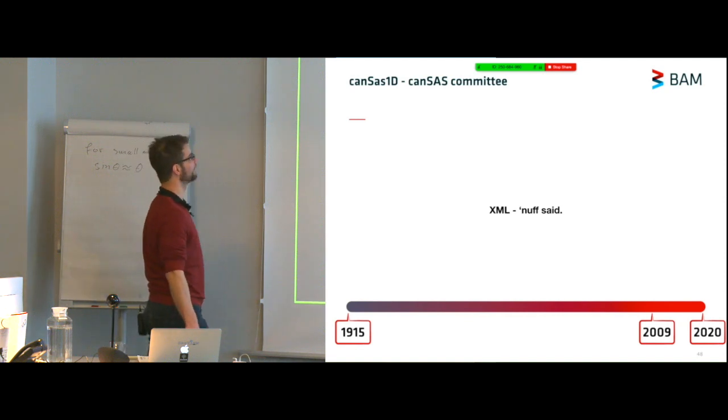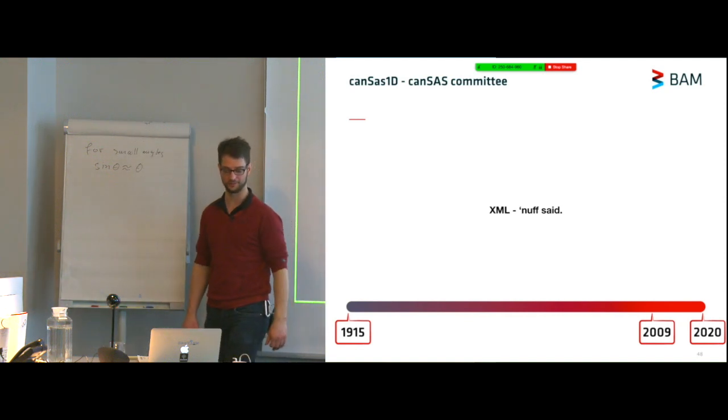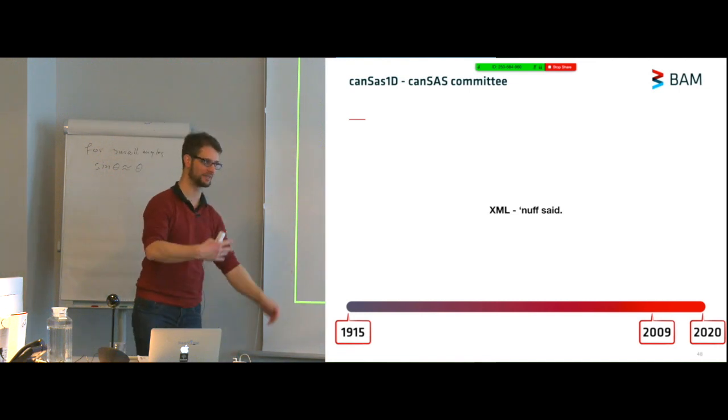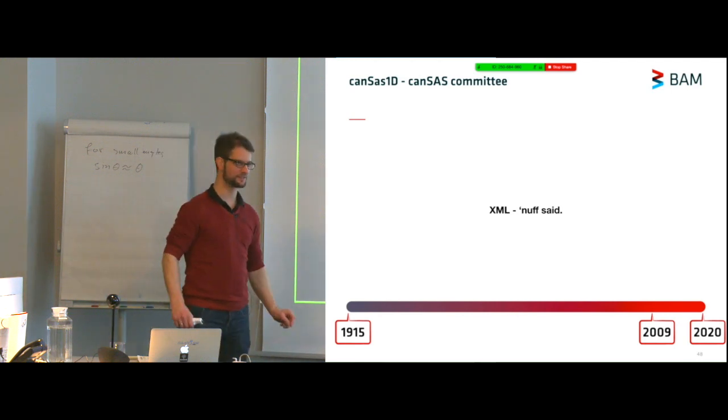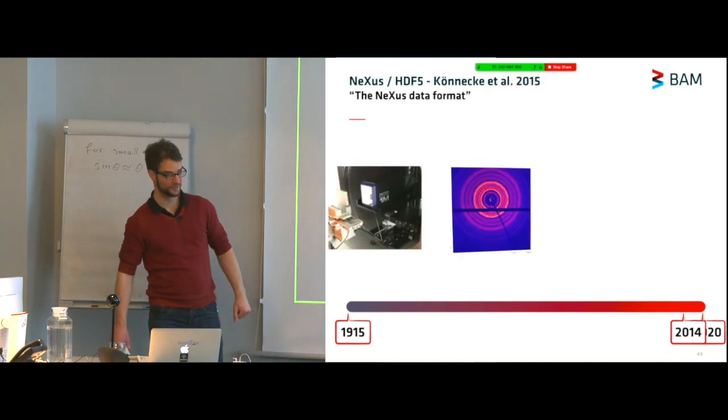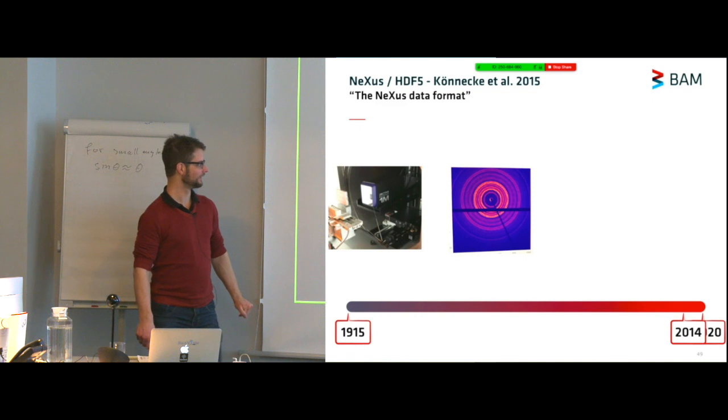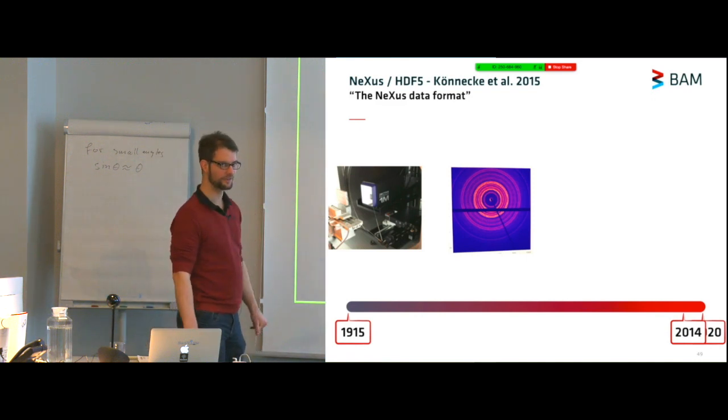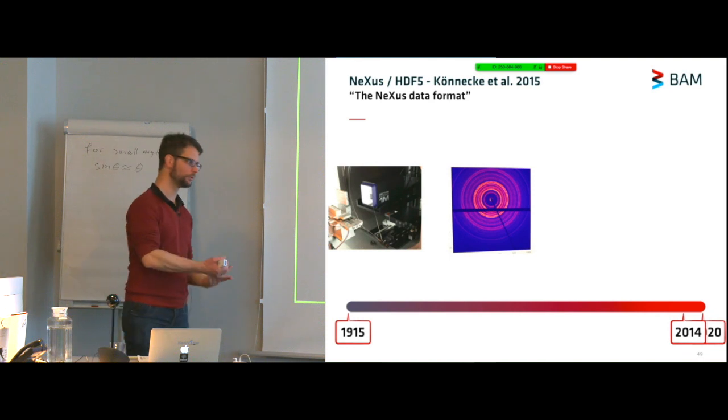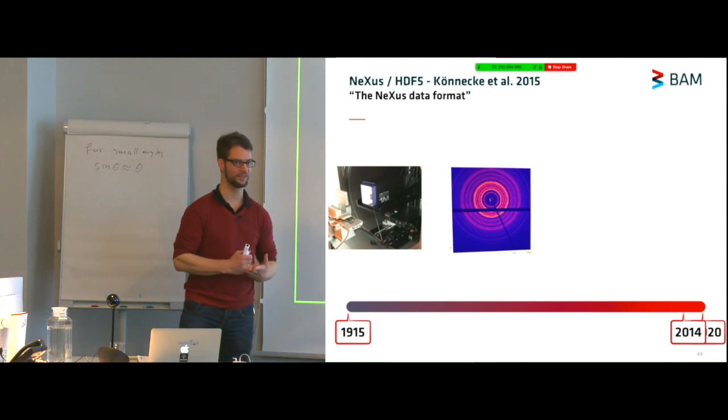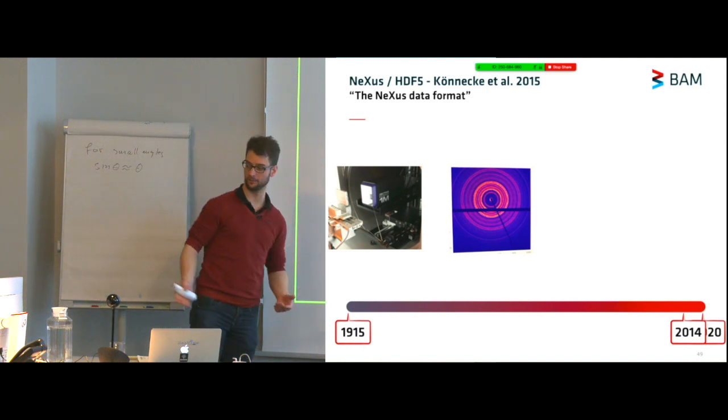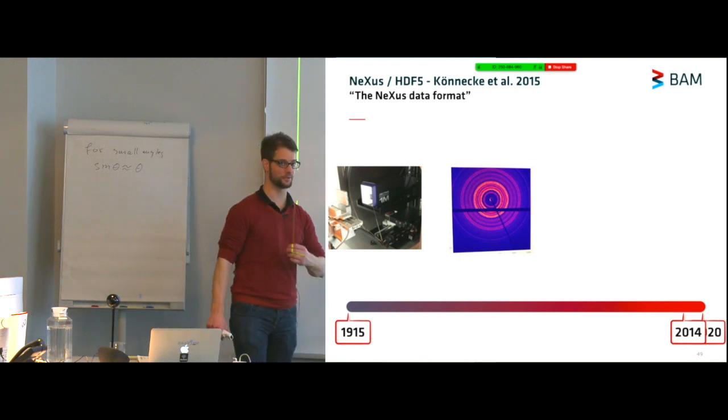Along that principle, in 2009, the canSAS group came up with the canSAS 1D format. This was, again, for one dimensional data with some metadata in there, but used XML. That isn't the easiest data format to use. However, there has been development since then. We got the NeXus data format. The NeXus data format allows you to store data from Neutron, X-ray and Muon instruments in a hierarchical way so that you can write your data in such a way that it describes itself. We have an example for that coming later today, I believe, where we'll take a look at some of the files, NeXus files, that we create for the mouse.